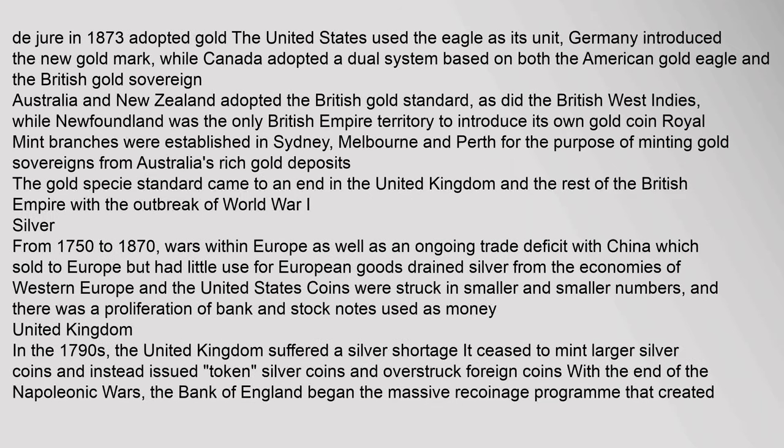The United States used the eagle as its unit, Germany introduced the new gold mark, while Canada adopted a dual system based on both the American gold eagle and the British gold sovereign. Australia and New Zealand adopted the British gold standard, as did the British West Indies, while Newfoundland was the only British Empire territory to introduce its own gold coin. Royal Mint branches were established in Sydney, Melbourne, and Perth for minting gold sovereigns from Australia's rich gold deposits. The gold specie standard came to an end in the United Kingdom and the rest of the British Empire with the outbreak of World War I.